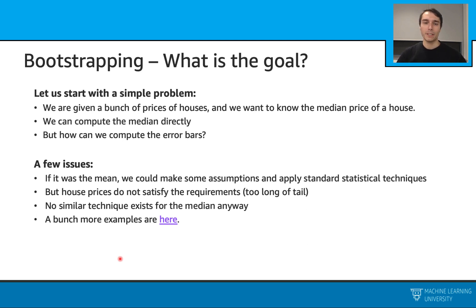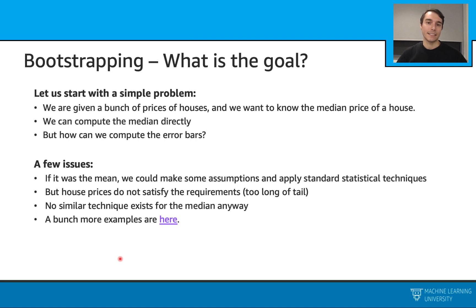For example, we may be interested in finding out the mean of a parameter of a population, or the standard deviation, or some type of proportion of that population. We usually use some standard techniques for those, and with these techniques we can get an error measure or error range with a certain confidence level.